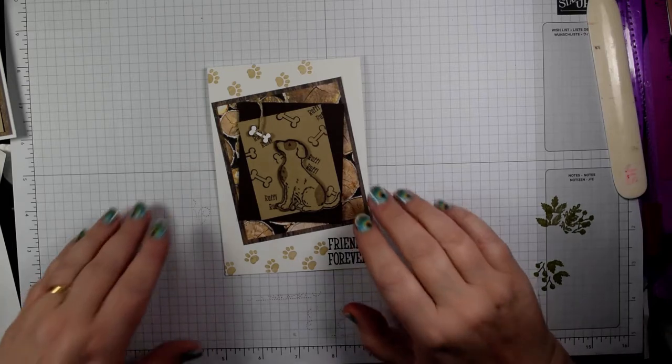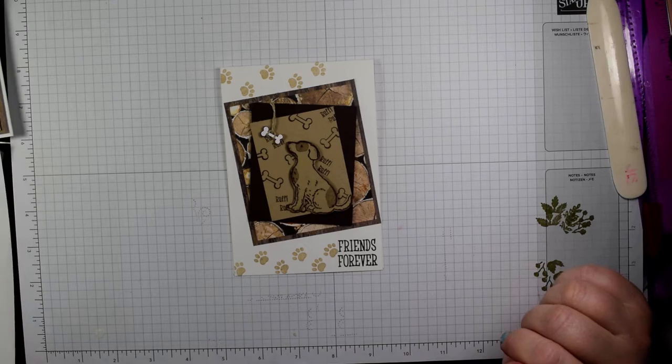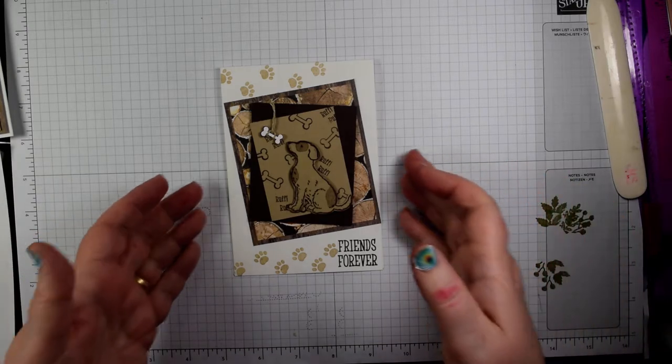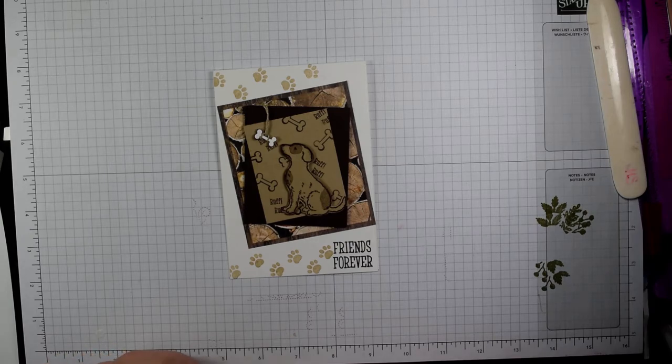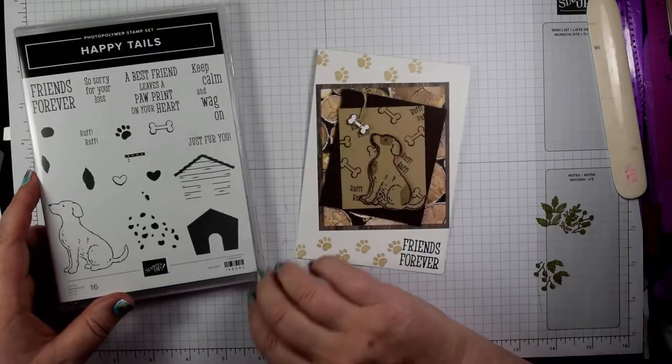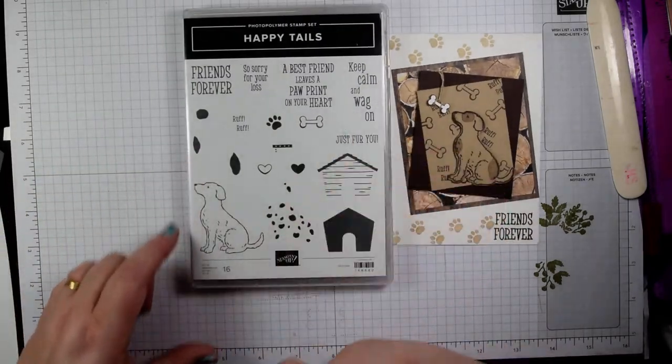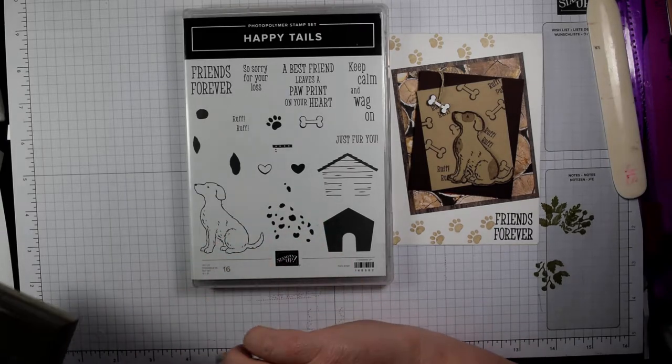Hi everyone, it's Heidi from flutterbyheidi.co.uk back with another project. This time it's part of my mini series showcasing one stamp set used several ways, and this is such a cute one. It comes in a bundle with a punch if you want, which I think is so worth it. It's this lovely Happy Tails. For anybody who's a dog lover or knows dog lovers, this is a great one.